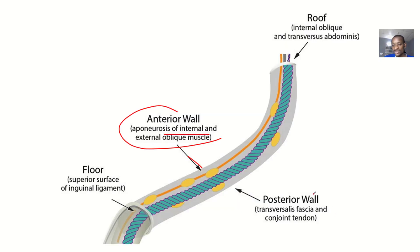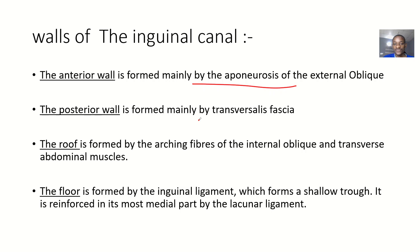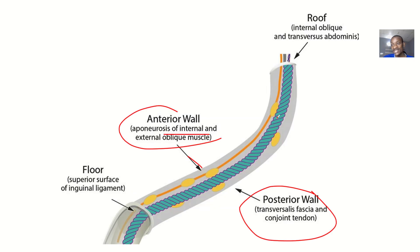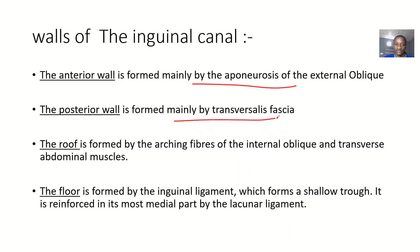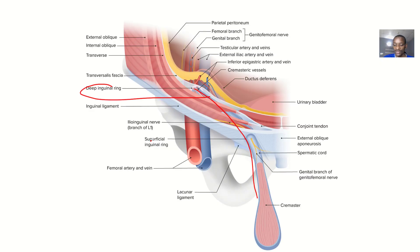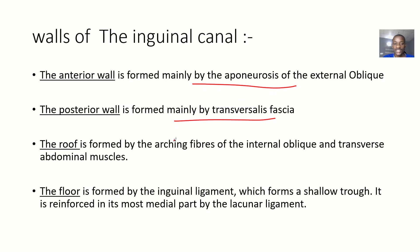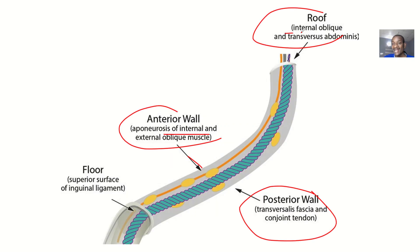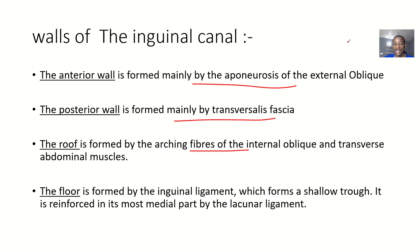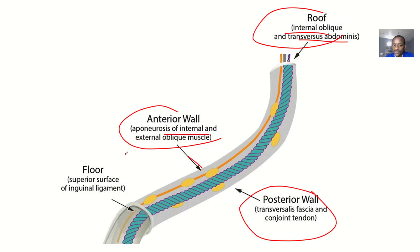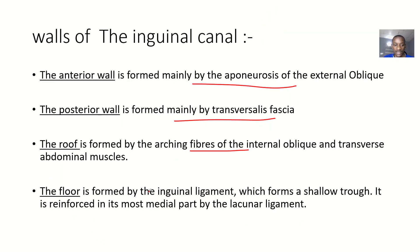Talking about the posterior wall — this is the one at the back — it is formed mainly by the transversalis fascia. Then the roof: the roof is formed by the arching fibers of the internal oblique and the transversus abdominis muscles.